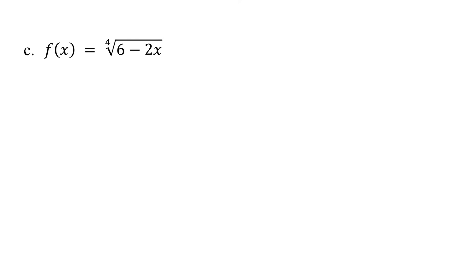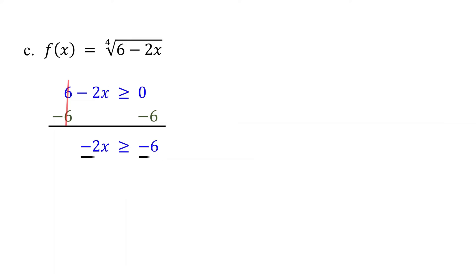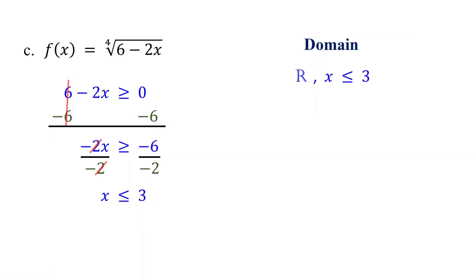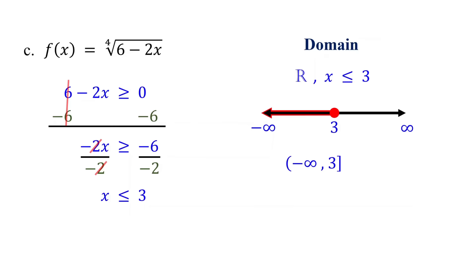For this function to be defined, 6 minus 2x must be greater than or equal to zero. To solve this inequality, first subtract 6 from both sides, then divide both sides by negative 2. Remember, when you divide or multiply both sides of an inequality by a negative number, you must change the direction of the inequality — keep this in mind, it is important. Therefore, the domain is all real numbers less than or equal to three. Mark a closed circle at three and shade the line to the left. From this, you can write the domain in interval notation.